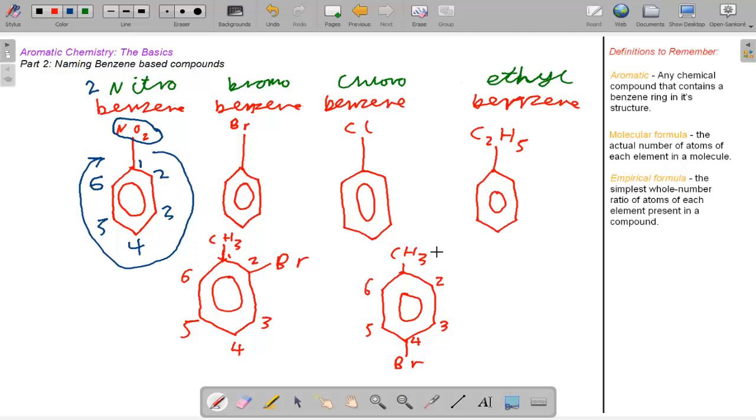So this particular example would be one, four, methyl bromobenzene, as you're working your way clockwise around the benzene ring. And methyl is on position one, and the bromine is on position four.